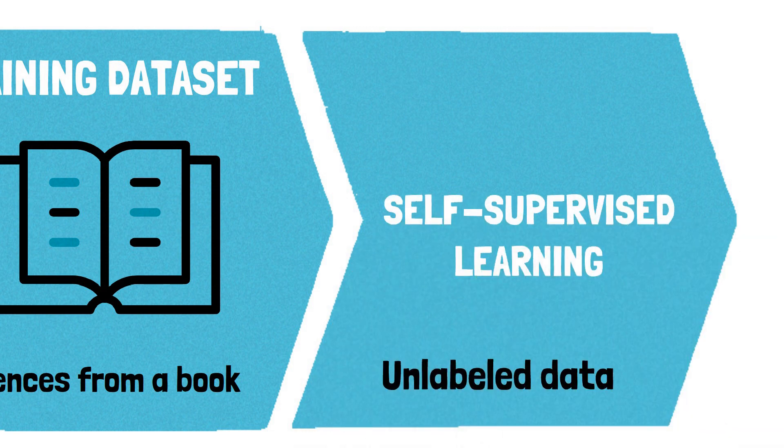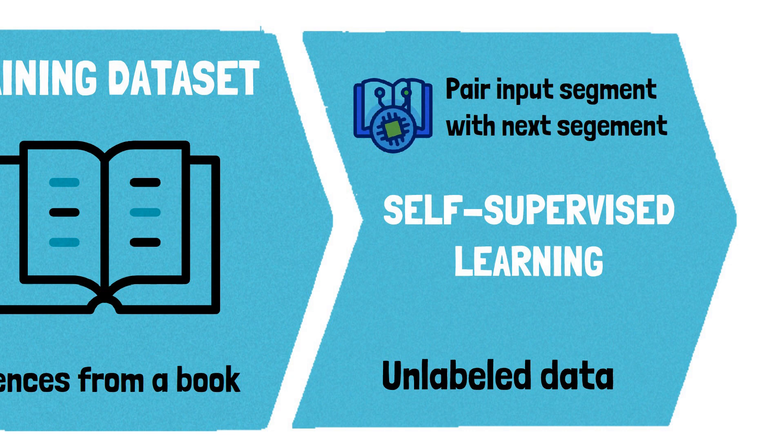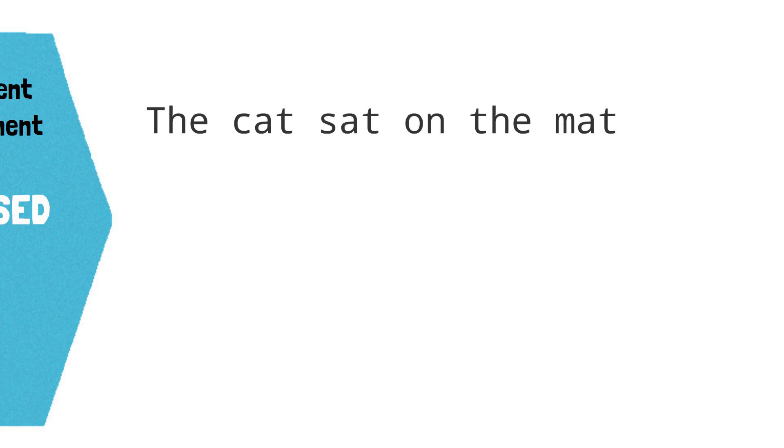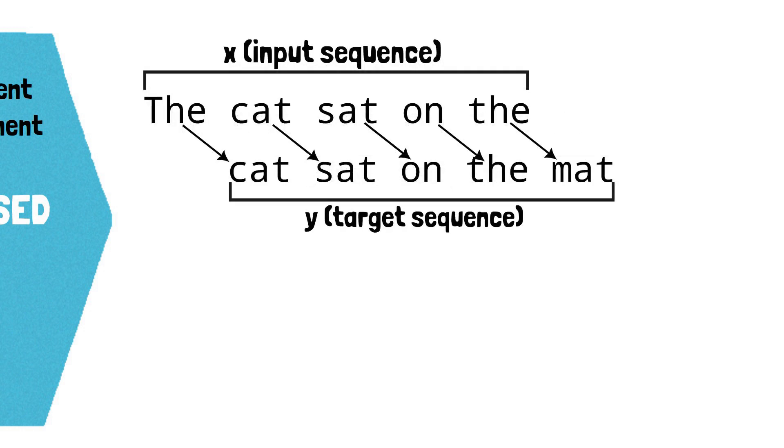This involves pairing a segment of text as input with the corresponding next segment as the target. For instance, from a sentence like 'the cat sat on the mat,' we may use 'the cat sat on the' as the input and 'cat sat on the mat' as the target. During training, we process one batch at a time.